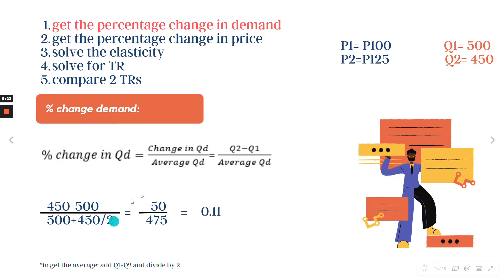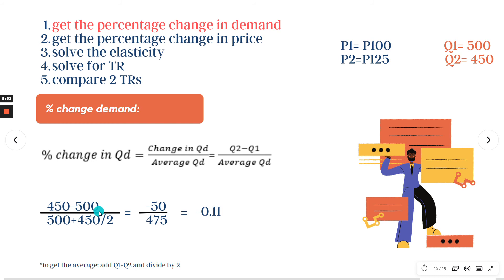Step one: get the percentage change in quantity demanded. The formula is (Q2 − Q1) divided by the average QD, where average QD = (Q1 + Q2) / 2. Substituting: (450 − 500) divided by (500 + 450) / 2. This equals negative 50 over 475, which is approximately negative 0.11. This is our percentage change in quantity demanded.